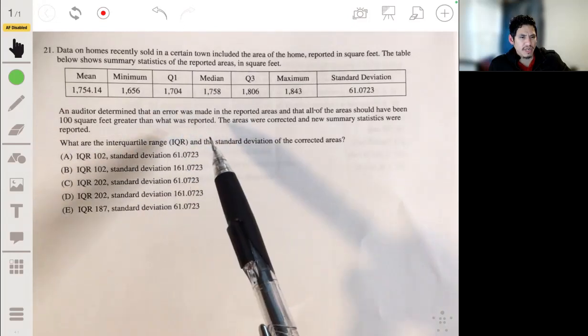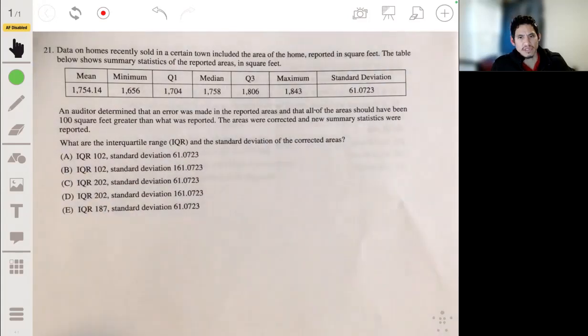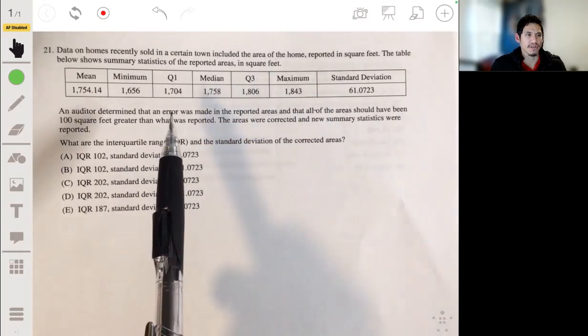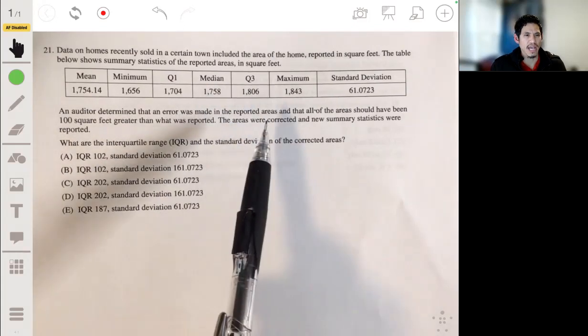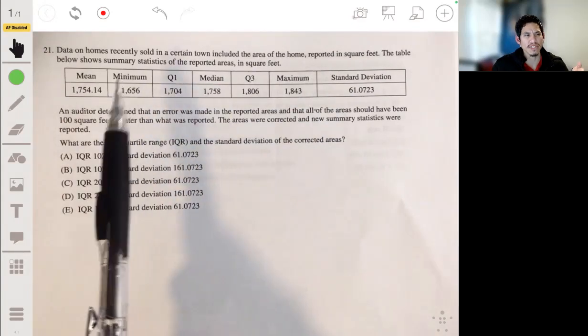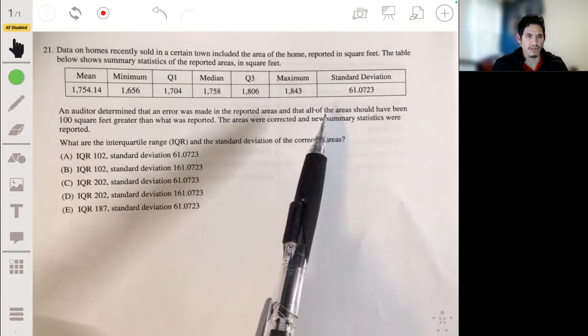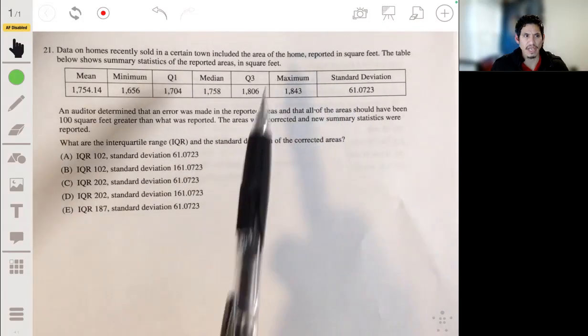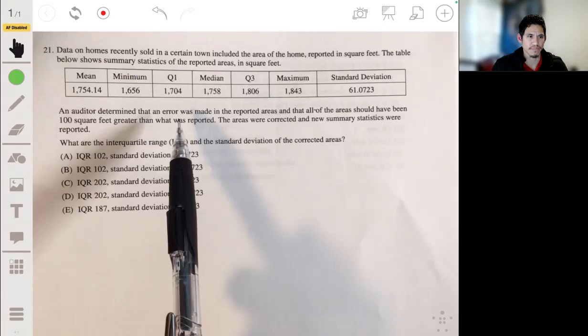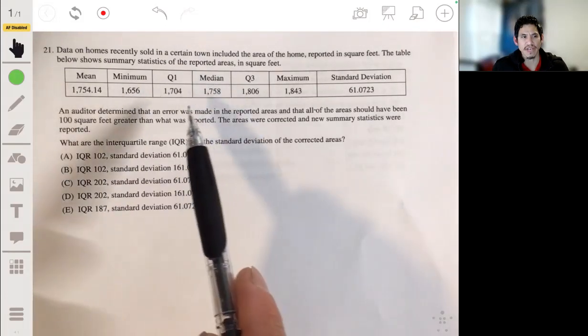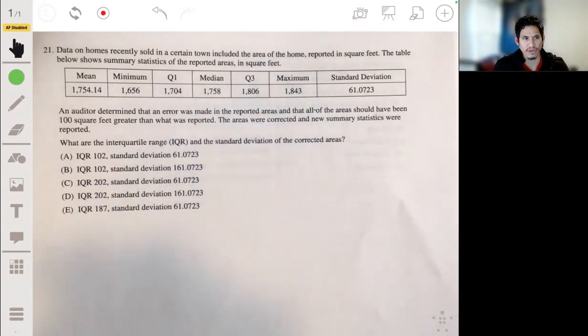So what are the interquartile range and standard deviation of the corrected area? All right, so this is a clever one. So again, let's go through this kind of carefully. So they had an error and that the error was that all these measurements should have been 100 square feet greater, or all the areas should have been 100 square feet greater than what's reported.